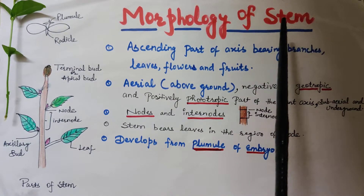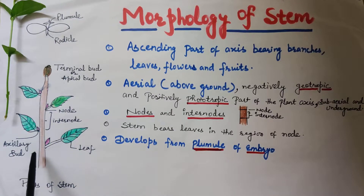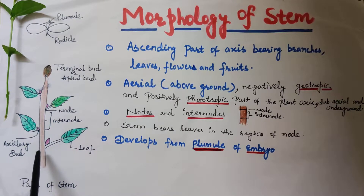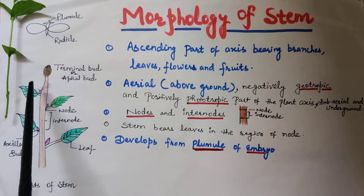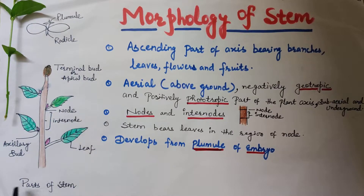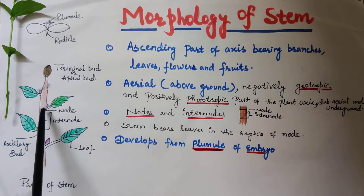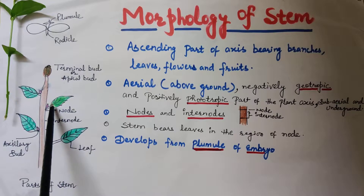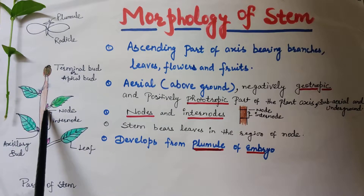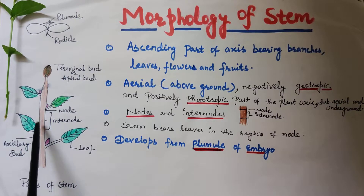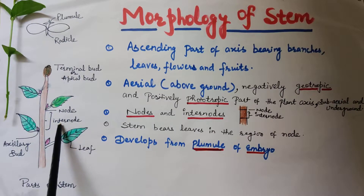So what is stem? Stem is the ascending part of the main axis of a plant. In flowering plants it bears branches, leaves, flowers and fruits on it. The identifying feature of a stem is that it has nodes and internodes. The point from where a leaf emerges out is called a node, and the gap between two consecutive nodes is called an internode.